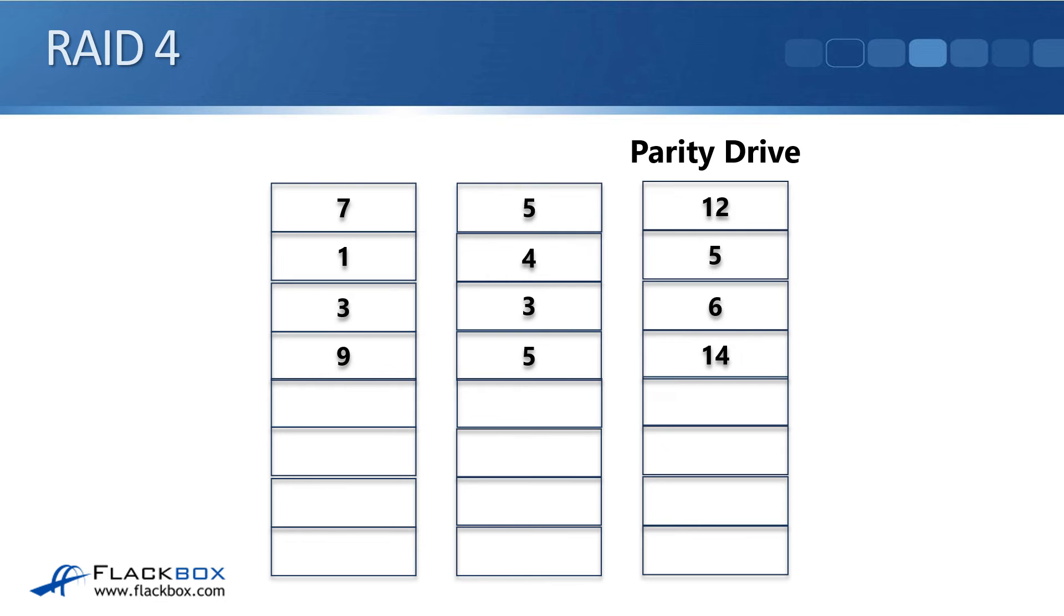The way it works is we'd written 7 and 5, so we add those two together to give us 12. We write 12 to the parity drive. Then we add 1 and 4 together, and we write 5 to the parity drive. 3 and 3, we write 6, and then 9 and 5, and we get 14. So a simplified version of how RAID works.